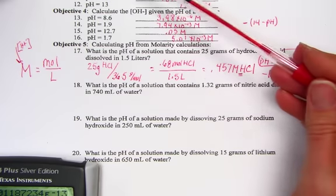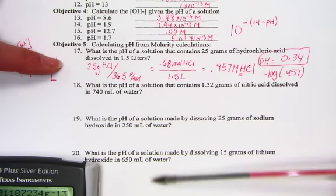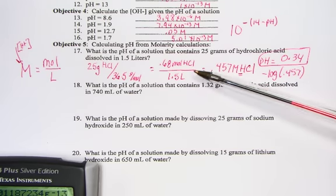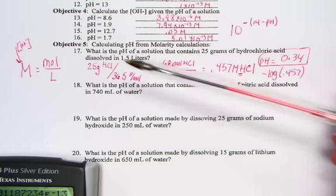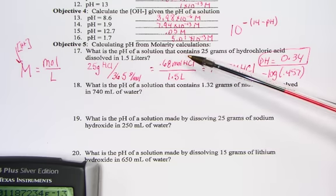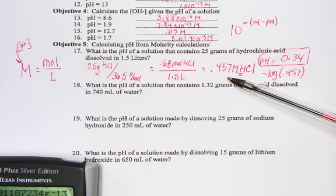In the previous problems, we were given the molarity. These are really the same type of calculation. We just have to work a molarity problem first. Grams over molar mass pulled out the moles. Moles per liter got us molarity. Molarity of the acid gives us directly the pH of our solution. So negative log the big M, and it gives us the pH of our solution.